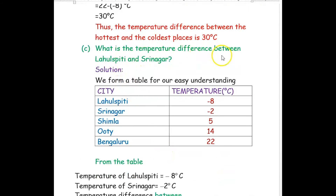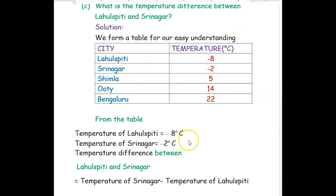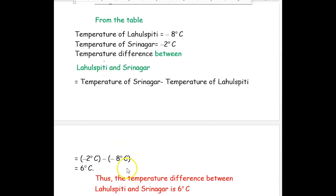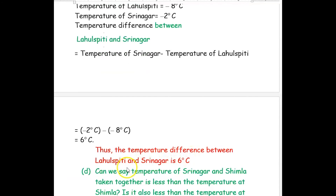The next question is: what is the temperature difference between Lahulspithi and Srinagar? Lahulspithi is negative 8 degrees Celsius and Srinagar is negative 2 degrees Celsius. The temperature difference is temperature of Srinagar minus temperature of Lahulspithi — that is negative 2 minus negative 8. Minus and negative will become plus, so negative 2 plus 8 equals positive 6 degrees Celsius. The temperature difference between Lahulspithi and Srinagar is positive 6 degrees Celsius.